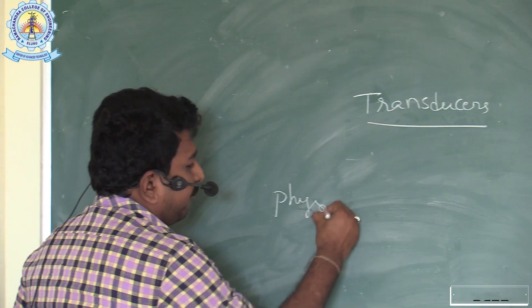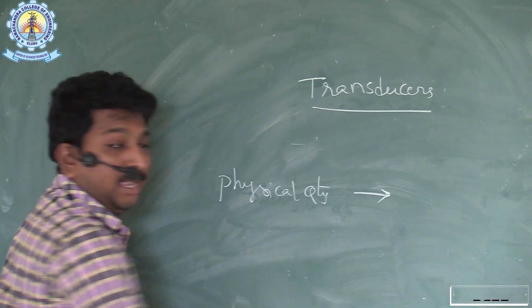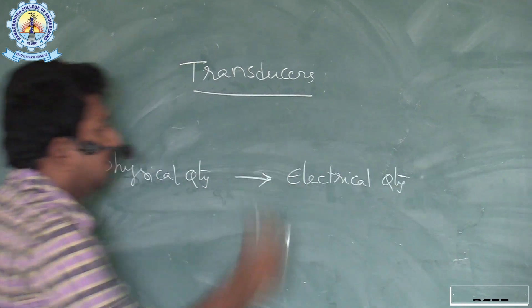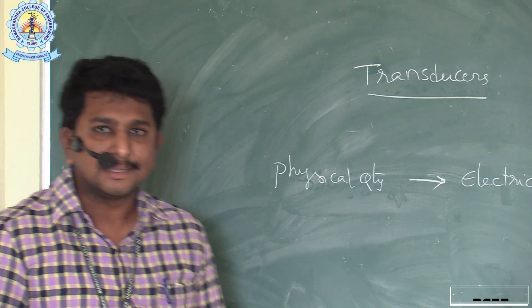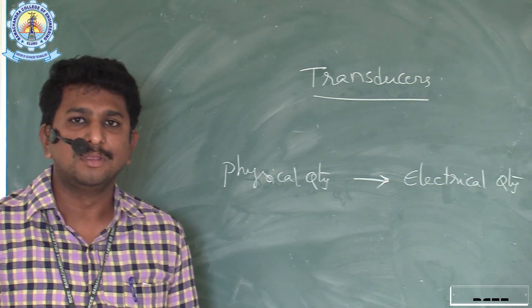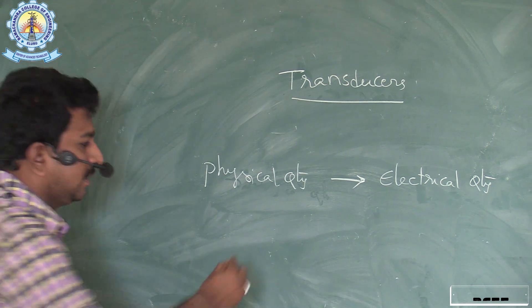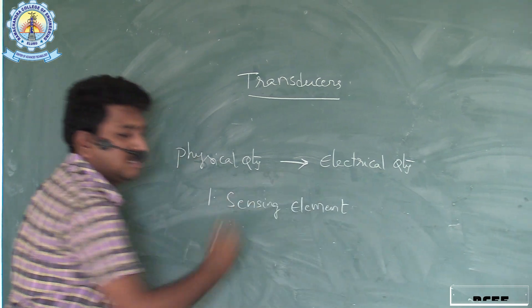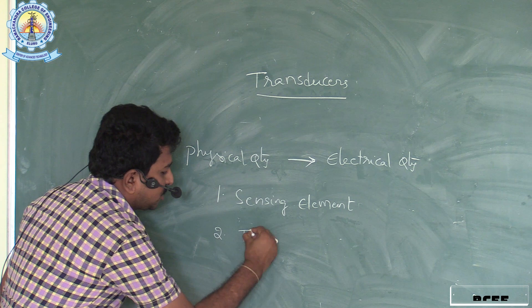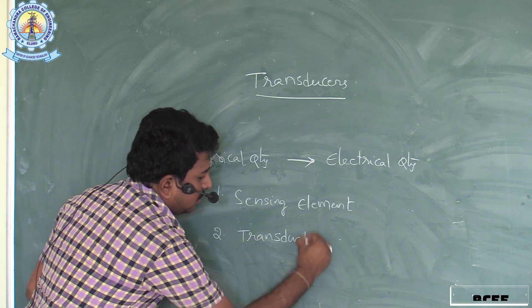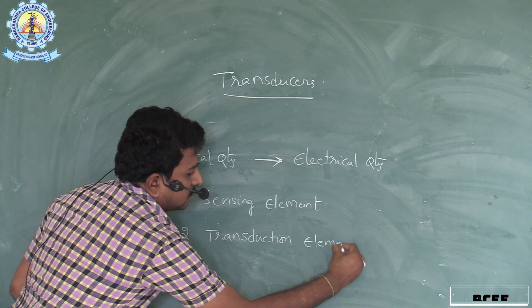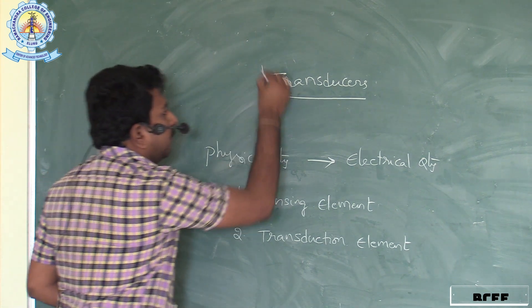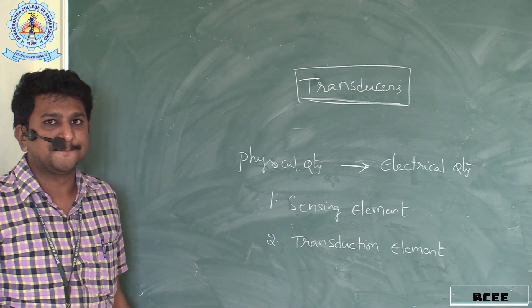In a transducer, any physical quantity is to be converted into an electrical quantity. There are two basic parts present in the structure of a transducer: the first one is the sensing element, and the second one is the transduction element.